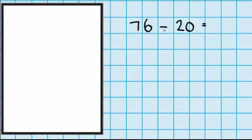So just like last time, I'm thinking about how many tens there are in 76. Well, there are 7 tens. And I can see over here that I need to take away 2 tens or 20.